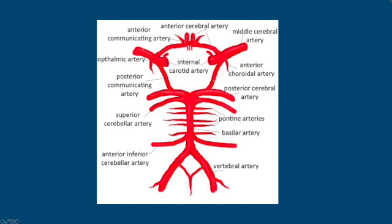There are collateral pathways between the anterior and the posterior circulation. Namely, those are the posterior communicating arteries, which extend from the supraclinoid segment of the distal internal carotid arteries to the junction of the P1 and P2 segments of the posterior cerebral arteries.